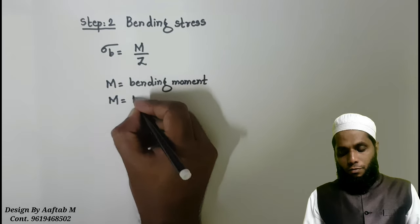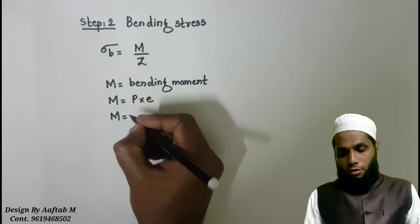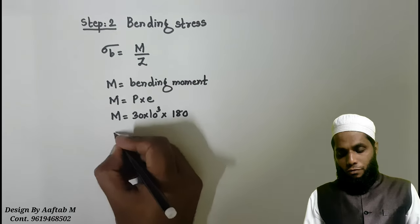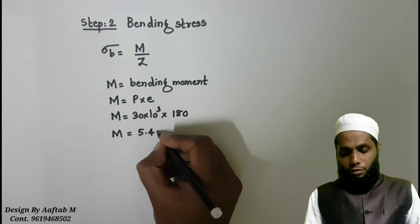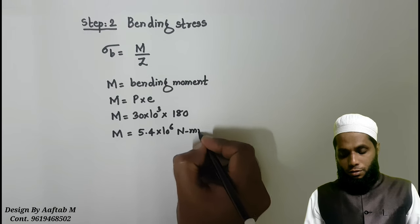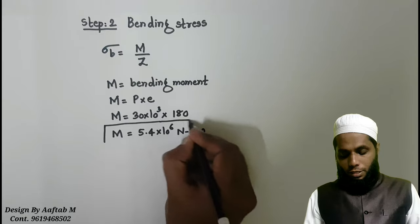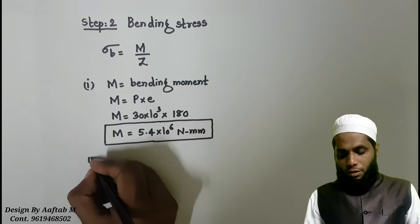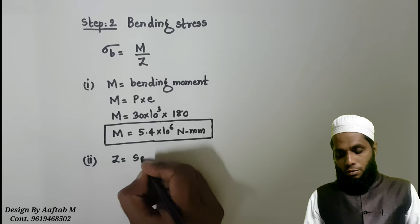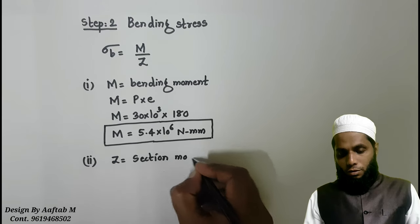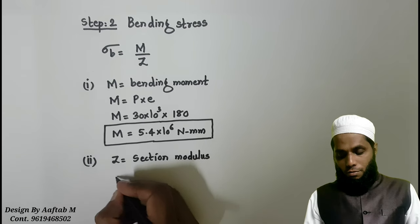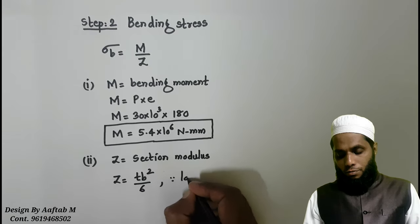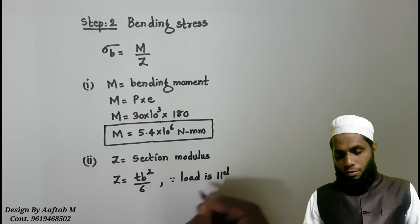And it is given by P into E. We have both the values. P we have 30 into 10 raised to 3 multiplied by 180. Therefore, M is equal to 5.4 into 10 raised to 6. That is bending moment. Then second one, we will find the value of Z. Z is nothing but section modulus.